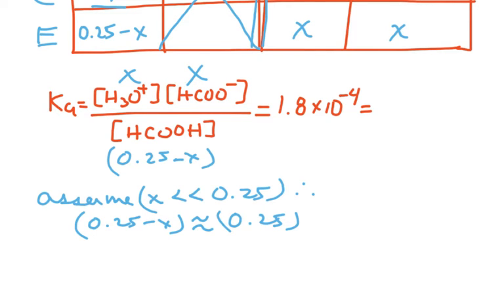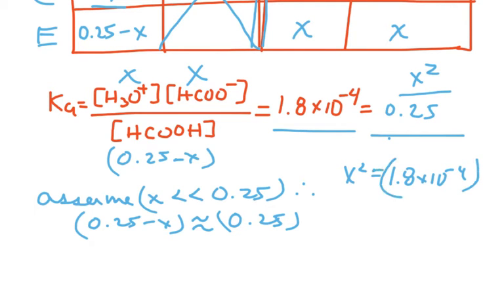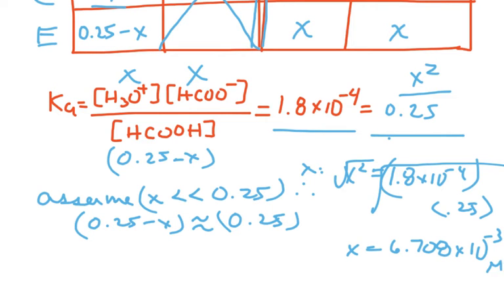Now that's going to simplify our math over here, so that's going to turn this into X squared over 0.25 equals 1.8. So to calculate that, I'm going to say that this is going to be X squared equals 1.8 times 10 to the negative 4 times 0.25. And so I want X, so I want the square root of this, I want the square root of these multiplied together. But my X comes out to be 6.7 times 10 to the negative 3, and that's a molarity.